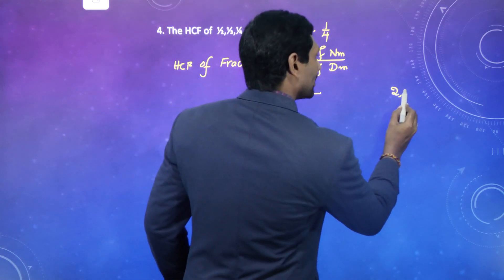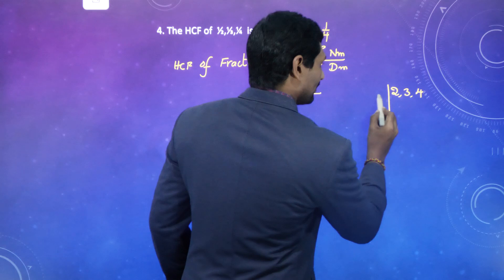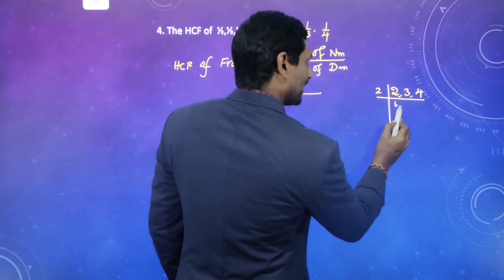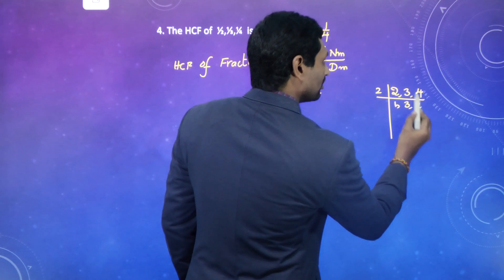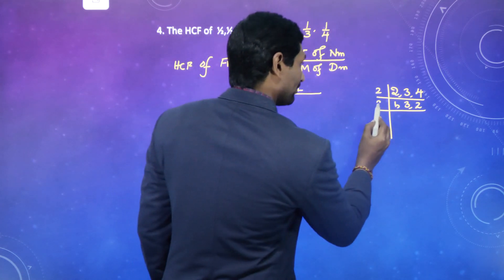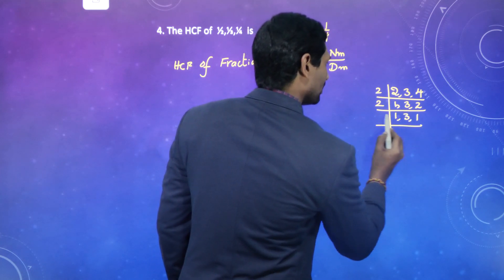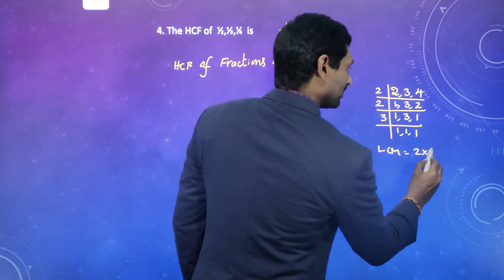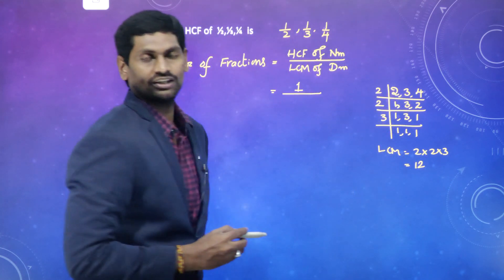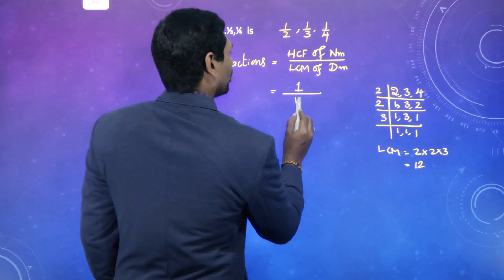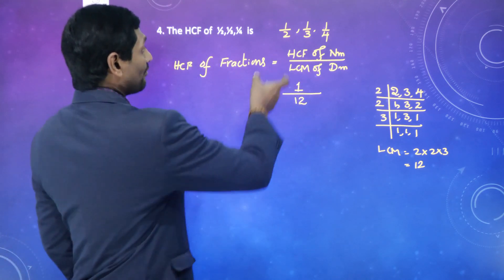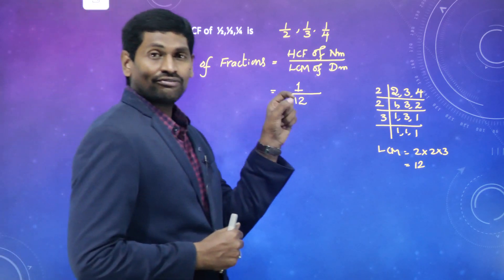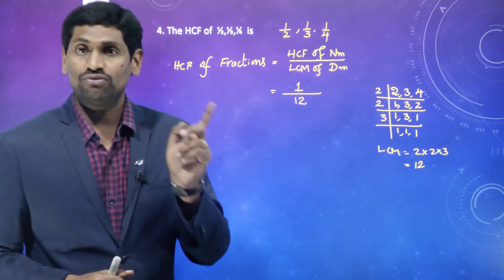Now find LCM of denominators 2, 3, 4 using the common division method. Taking 2 table: 2÷2=1, 3 stays, 4÷2=2. Again 2 table: 2÷2=1, 3 stays. Then 3 table. LCM = 2 × 2 × 3 = 12. LCM of denominators is 12. So overall, HCF of the given fractional numbers is 1/12.